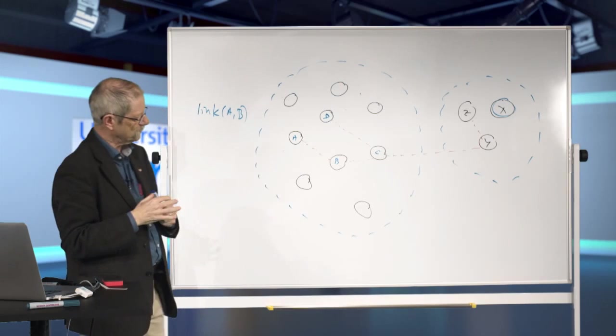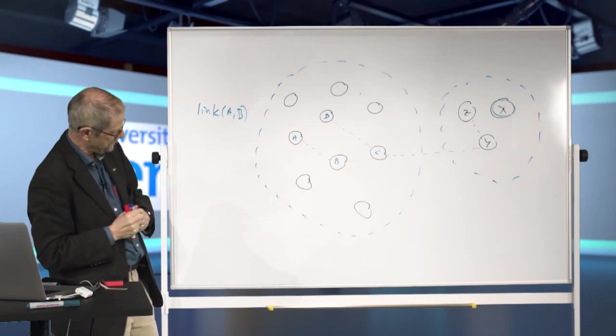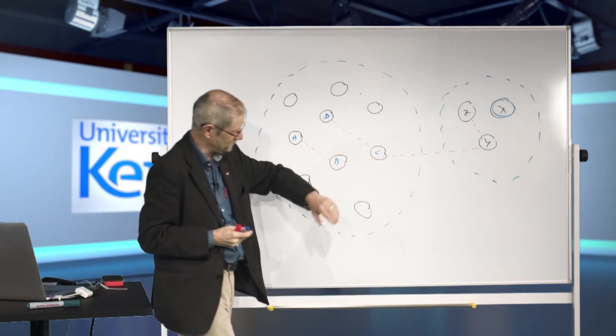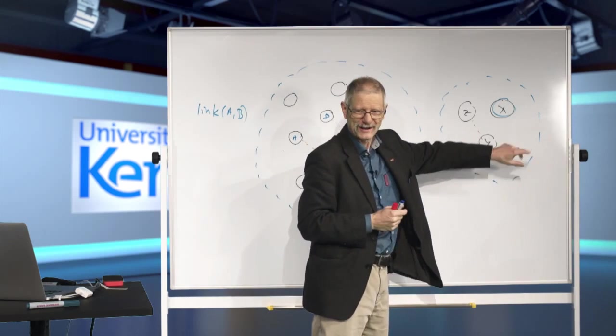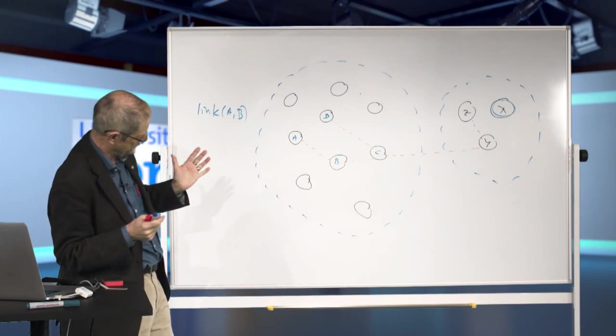So now we've got a system of processes on two physically separated nodes. This might be in Sweden. That might be in Australia. It doesn't matter where they are. The link mechanism works exactly the same.